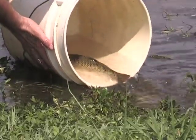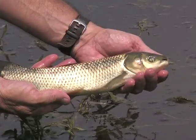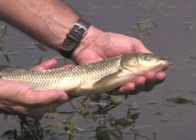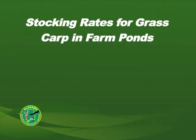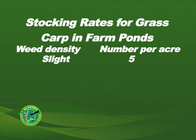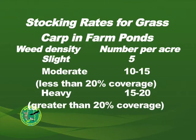Although grass carp will not reproduce in a pond, it is recommended that sterile triploid fish be stocked in case of escape downstream. Stocking rates usually range from 5 to 20 per acre depending on the species of plant, severity of the infestation, and the area of shallow water in the pond. A higher density may be necessary in extreme cases.